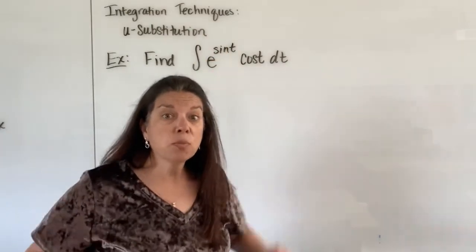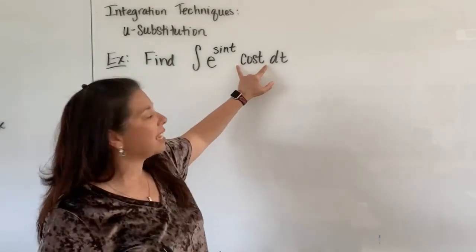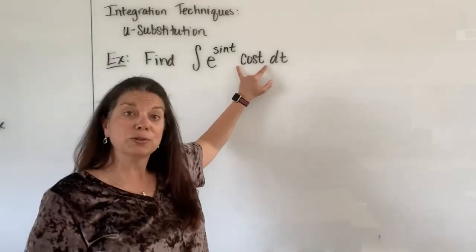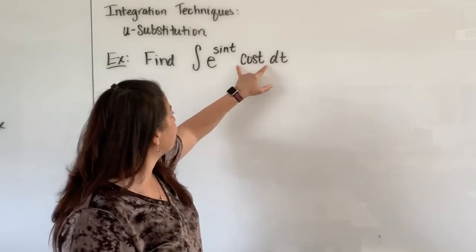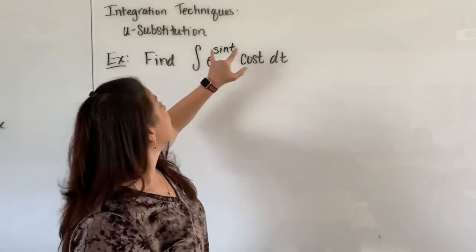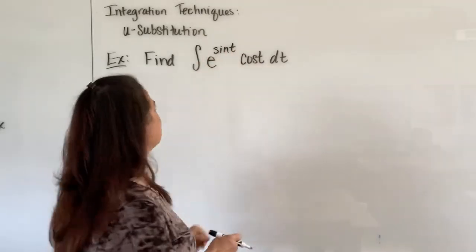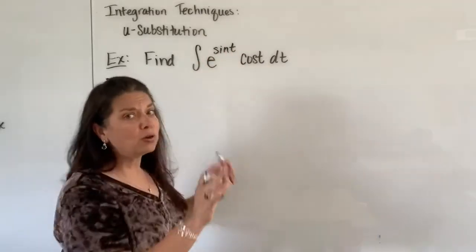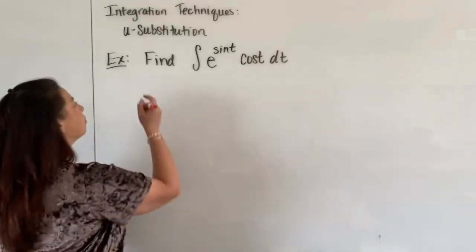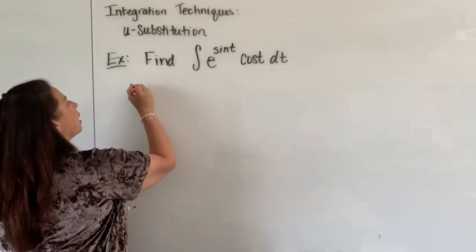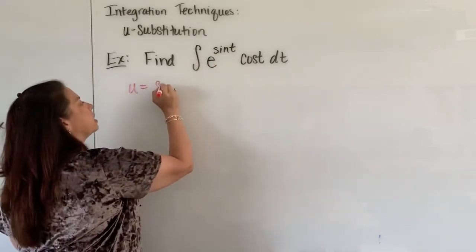Even more so, I hope that you notice that this piece that's hanging out here — cosine t — happens to be coincidentally the derivative of sine t. So all of those little clues point to the fact that we should probably go ahead and pick our u to be sine t.